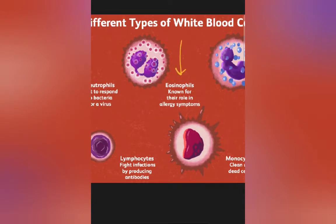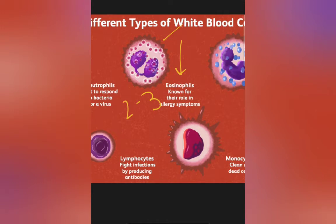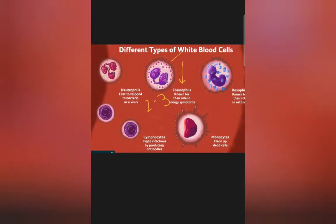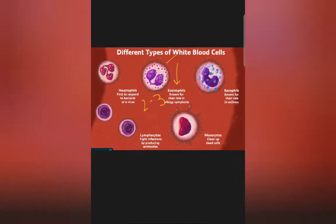Eosinophils have cytoplasm containing abundant coarse granules — unlike the fine granules of neutrophils — and their nucleus has two to three lobes; in this picture a two-lobed nucleus is visible. Their main function is their role in allergy symptoms. They have anti-histamine properties: histamines are chemicals in the body causing allergic reactions, and anti-histamines counteract those reactions. The discussion of basophils will continue in the next video.